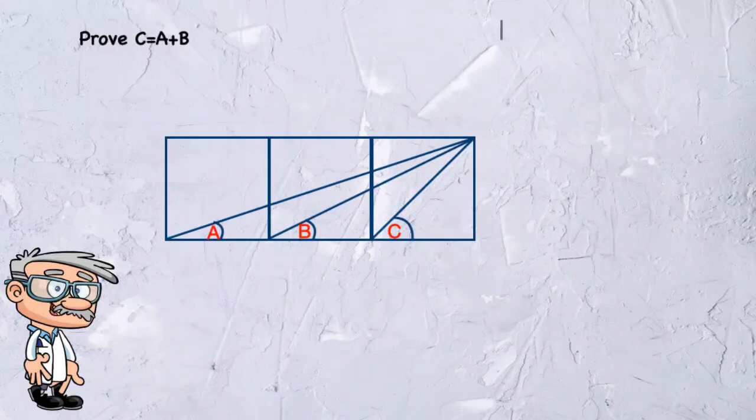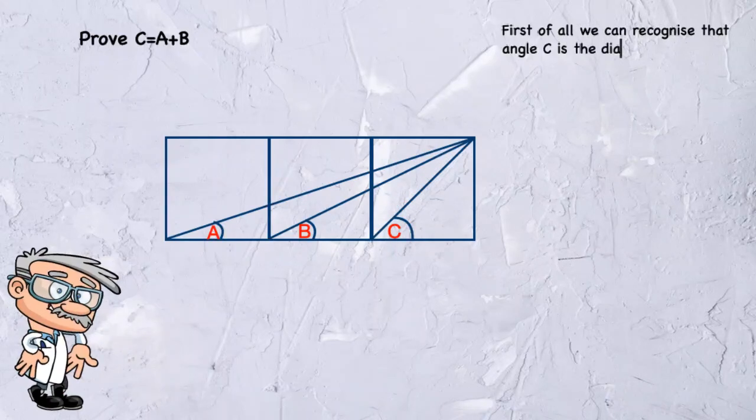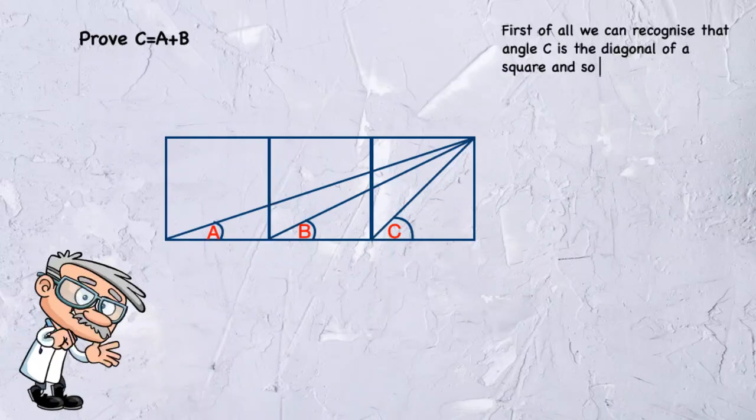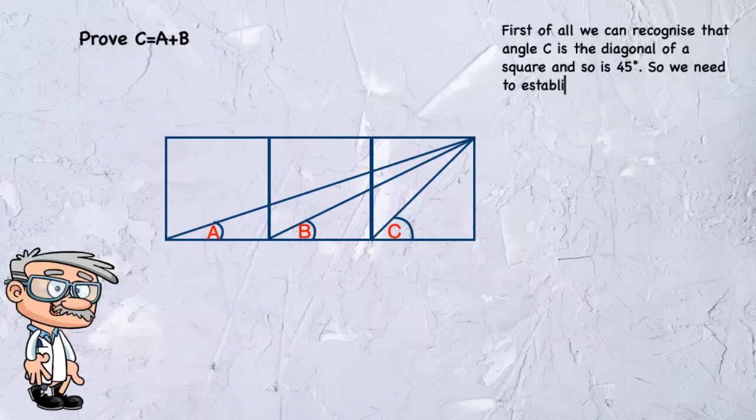First of all, we can recognize that angle C is the diagonal of a square, and so is 45 degrees. So we need to establish that angles A and B add up to 45 degrees.